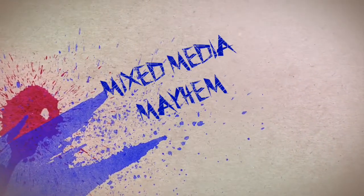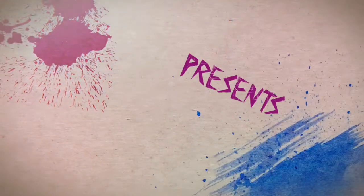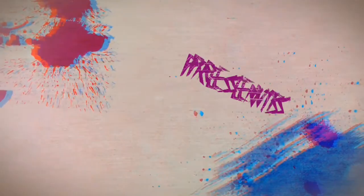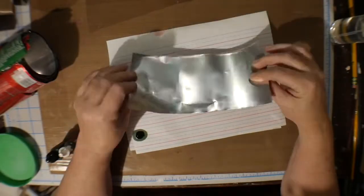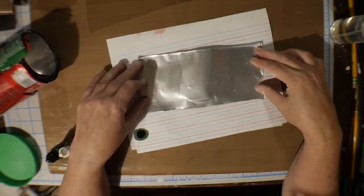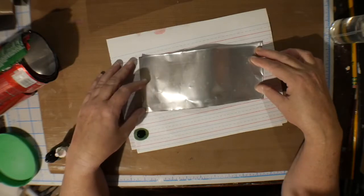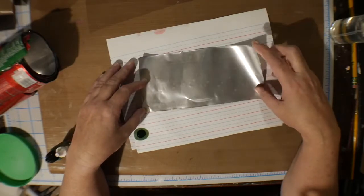Mixed Meaty Mayhem coming up! This is a soda can. I cut off the top and bottom. You have to be careful when you do that because it's very sharp.